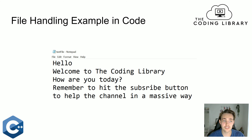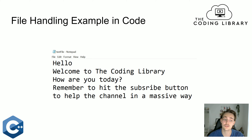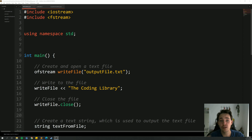Now we have a file handling example that we're going to apply in code. We have a text file with some different text in it, and we're going to read that. First, we're going to open up the file in C++, then read the content into C++ and do whatever we want with it. I'm also going to show you an example of how we can output stuff from C++ to a file, or erase a file and create a new one. So I'm going to show some different examples of how we can do file handling in C++.